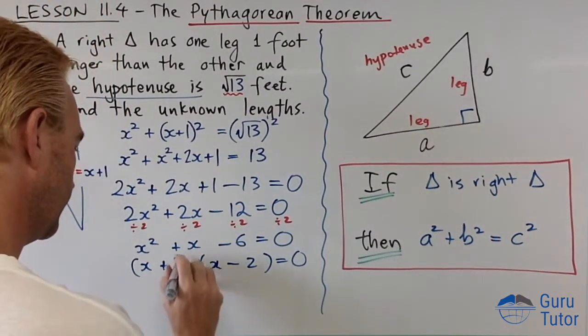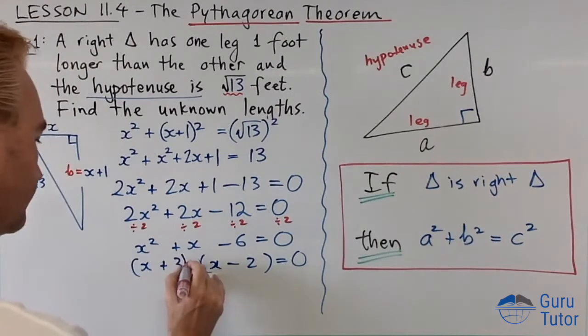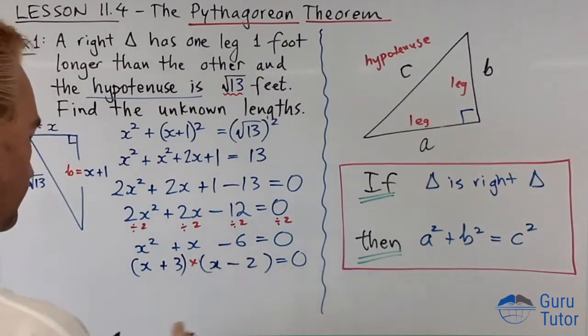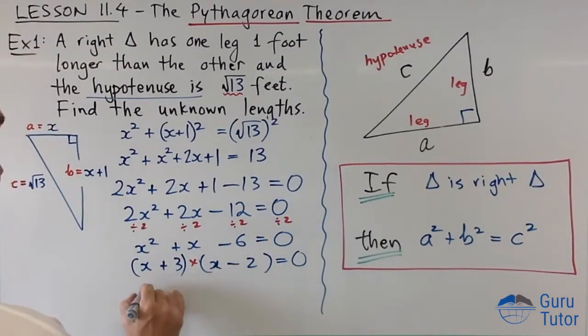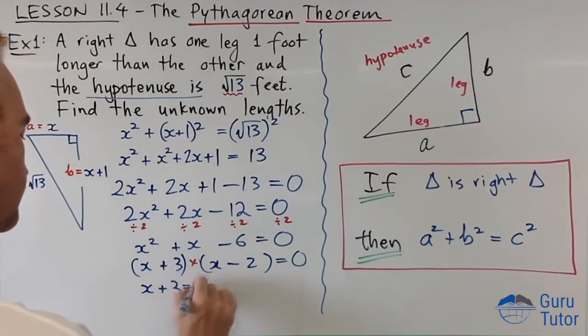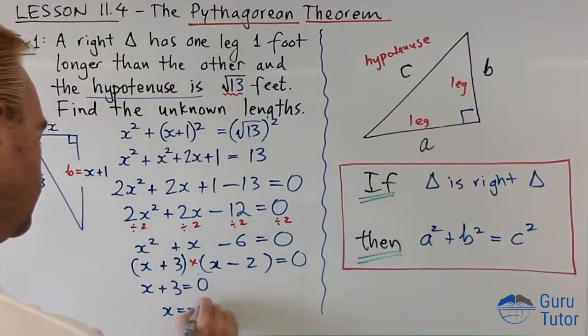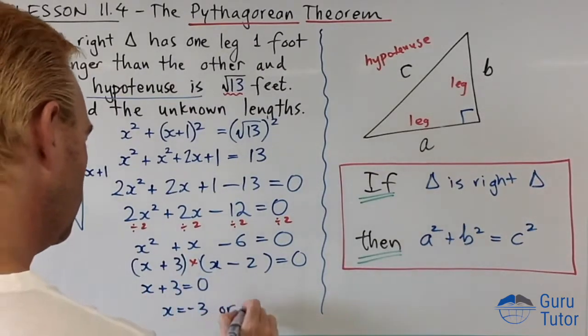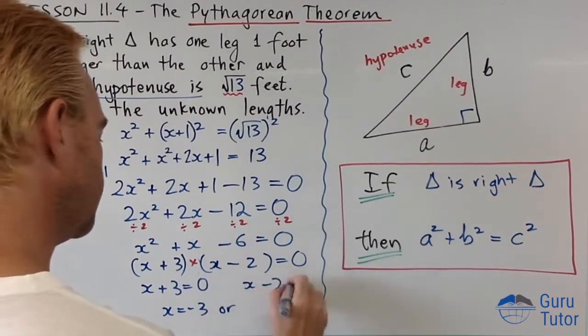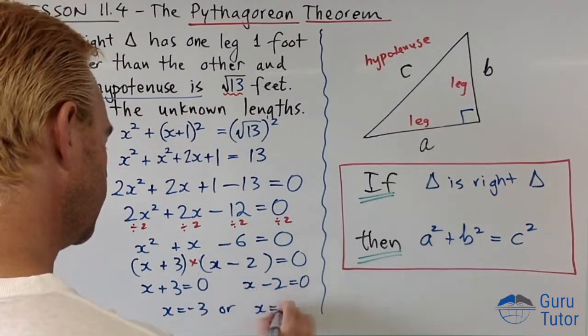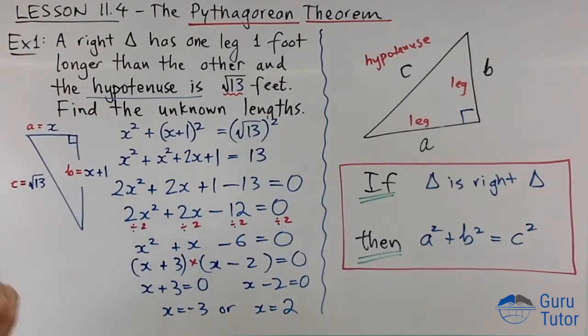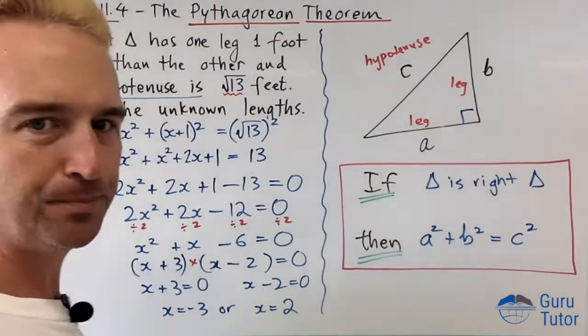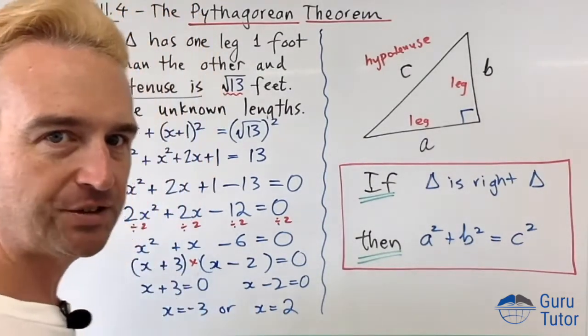Now we're going to have zero product property. Okay, we've got one thing times another thing equaling zero, which means this could be zero: x plus three equals zero, which gives us a solution x equals negative three, or x minus two equals zero. In other words, x equals two. And there we go, we're solved for x.